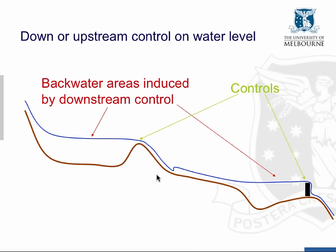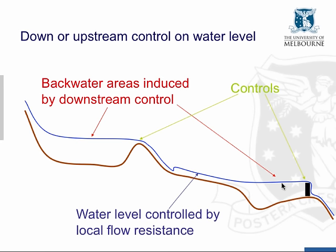Upstream of these critical flows we get backwater areas. In these areas, the water surface profile is influenced by the downstream control. Remember, at subcritical flow the wave speed is faster than the current speed, so you can get an upstream influence of the weir. As we go further upstream into the weir pool, eventually we return to something more like uniform flow conditions, where the level is controlled by the local flow resistance — a force balance giving uniform flow conditions.